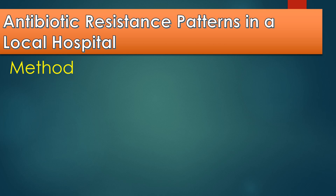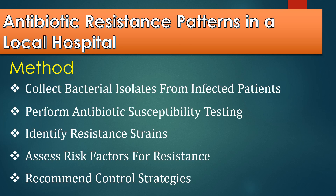How do researchers study antibiotic resistance patterns? The method involves collecting bacterial isolates from infected patients in a local hospital, performing antibiotic susceptibility testing, identifying resistance genes, and analyzing resistance trends. Researchers compare results across different wards and patient groups to identify high-risk areas. Data is reported to hospital infection control teams to adjust treatment guidelines.